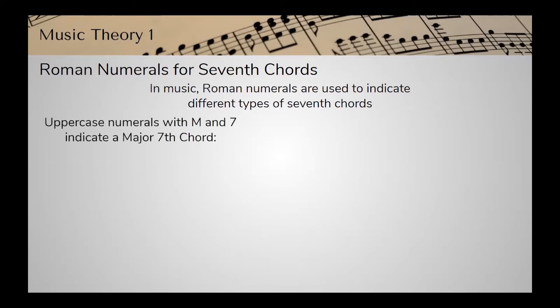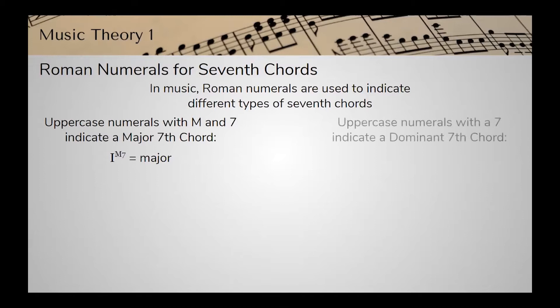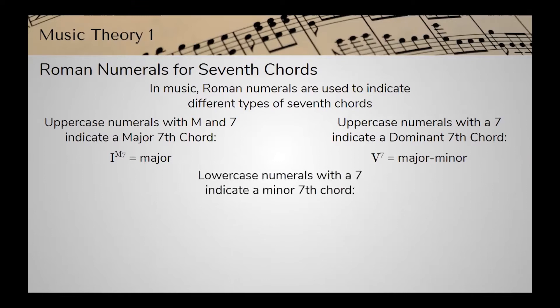Uppercase numerals with an M and a seven indicate a major seventh chord. For example, a capital I with an M and a seven means it's a major seventh chord. Uppercase numerals with just the seven — without the M — indicate a dominant seventh chord. So a capital V with a seven means it's a dominant seventh chord, also known as a major minor seventh chord. Lowercase numerals with a seven indicate a minor seventh chord — for example, lowercase ii seven means it's a minor seventh chord.